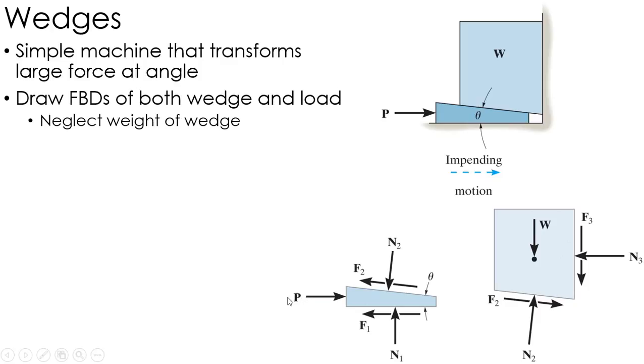And again, it's always going to oppose motion. So my P here is going to the right on the wedge. That means the friction force is heading to the left. Newton's third law flips F2 over here. This wedge is going to move up, so there's a friction force down on the wall on the right.